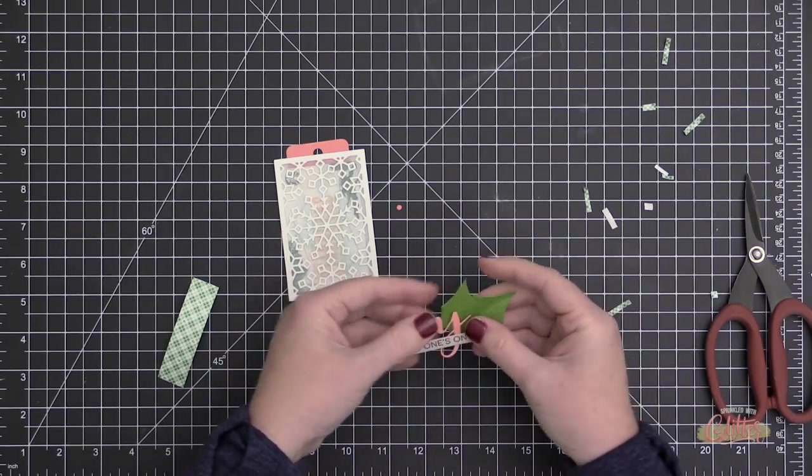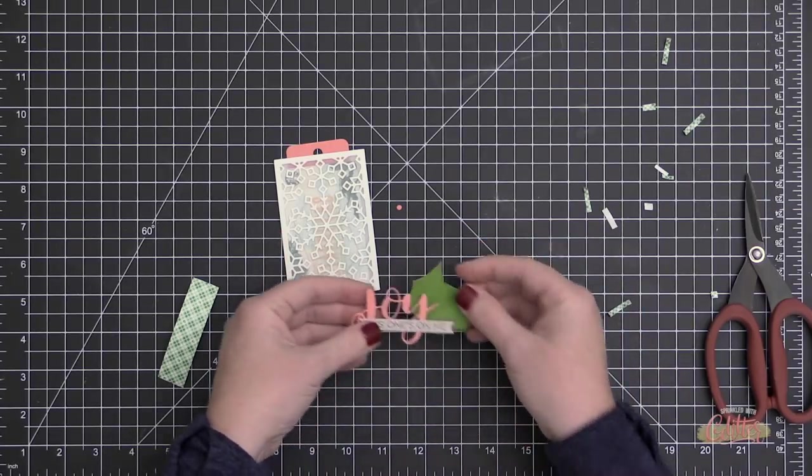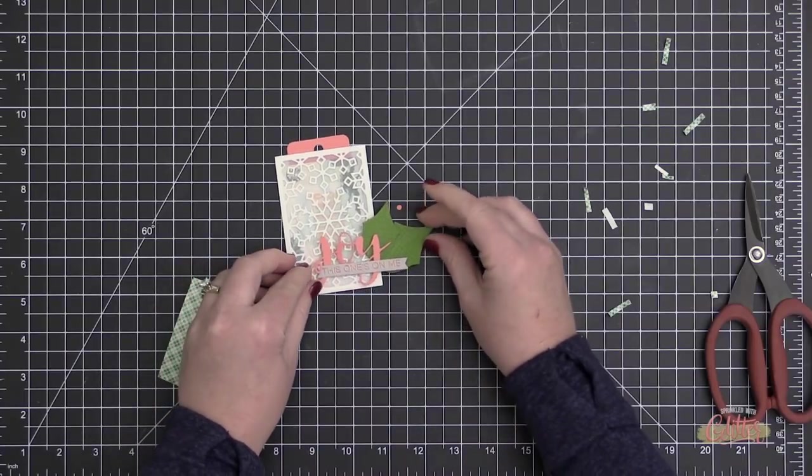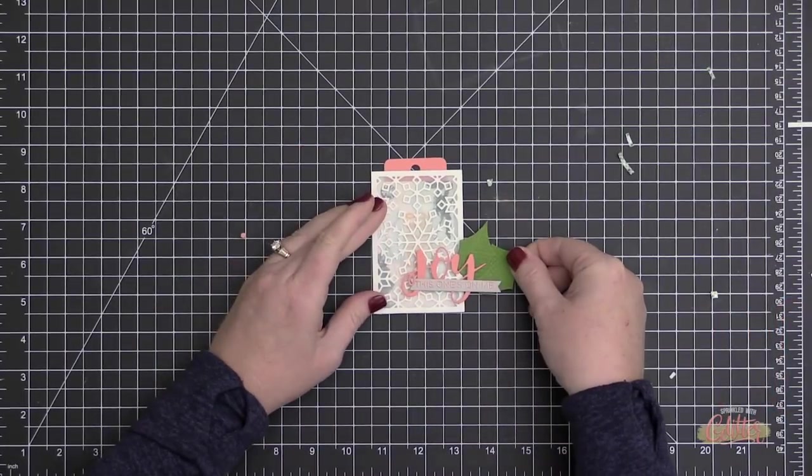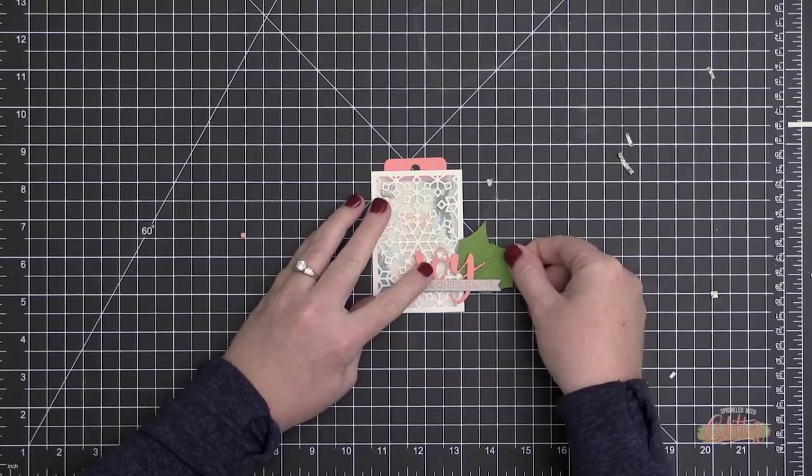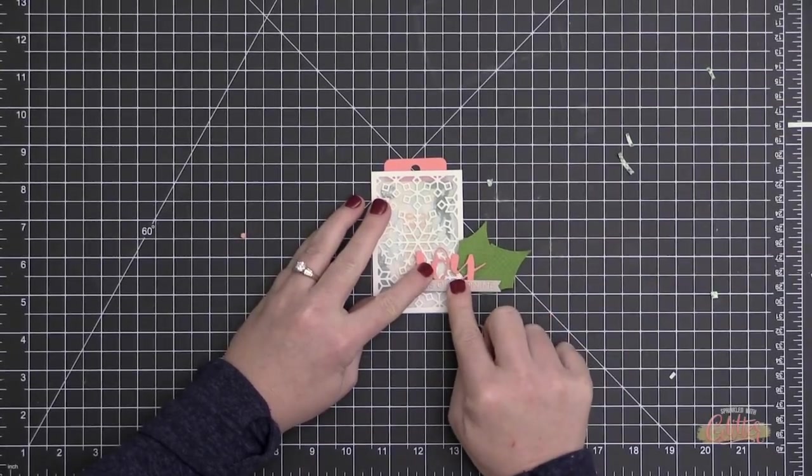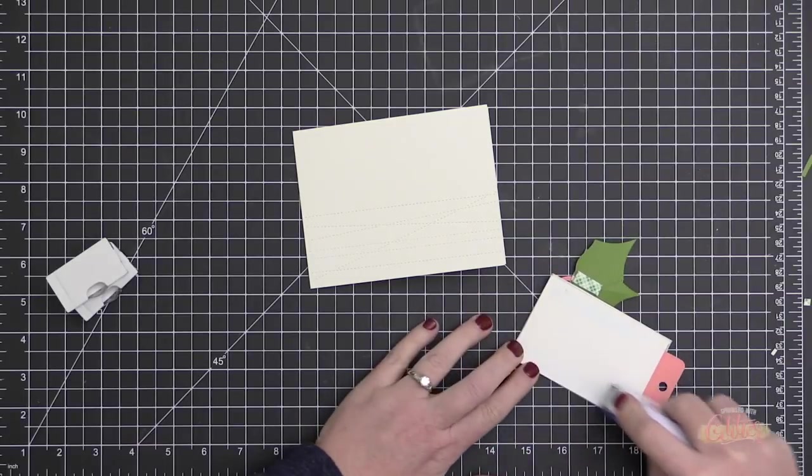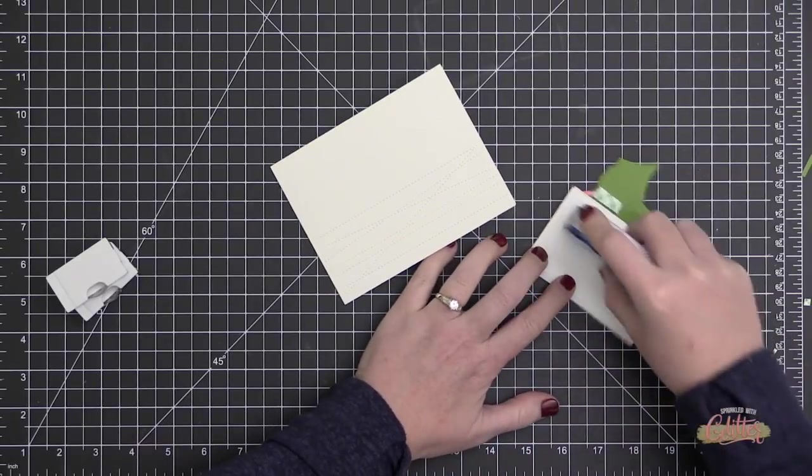Now I've added some foam adhesive to the back of this little grouping here, and I'm just attaching my leaves kind of coming out the right side of that Joy sentiment. Then I'm going to use foam adhesive once again to adhere this onto my gift card pocket.